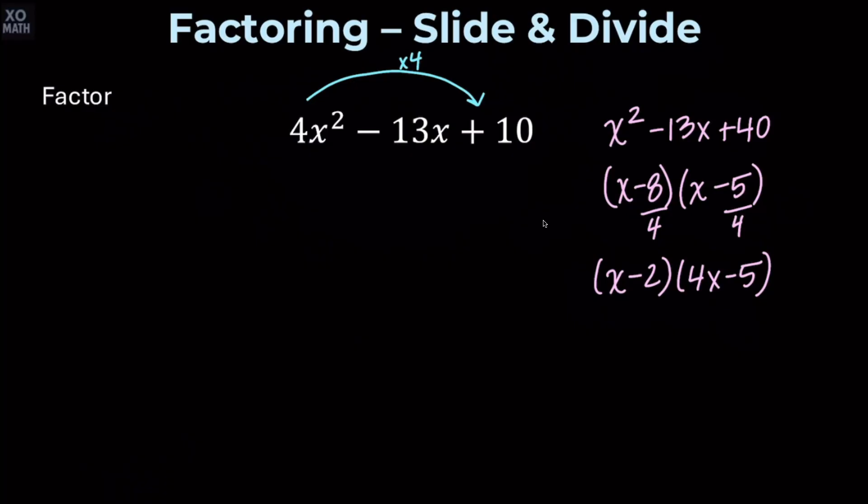So the final answer to the original quadratic is going to factor to quantity 4x minus 5 times quantity x minus 2. We traditionally put the one with the higher coefficient in front. Although it doesn't really matter because multiplication is commutative, we'll usually see the higher leading coefficient factor in the front.